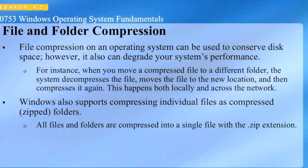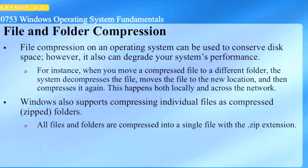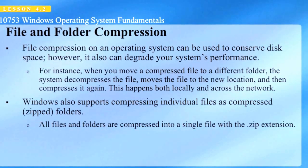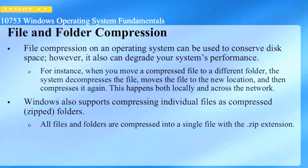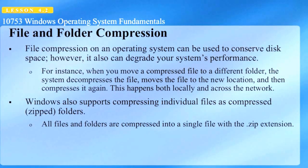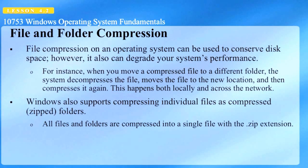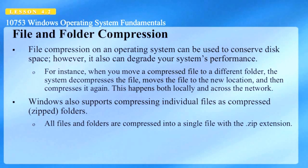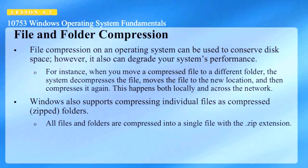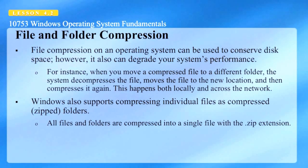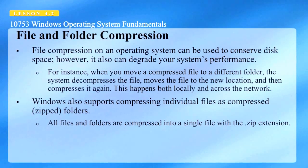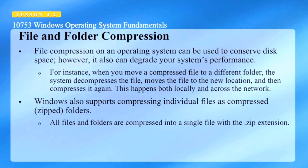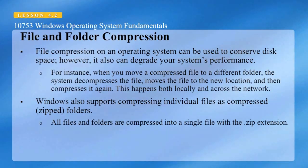File compression on an operating system can be used to conserve disk space. However, it can also degrade your system's performance. For instance, when you move a compressed file to a different folder, the system decompresses the file, moves it to the new location, and then compresses it again — this happens both locally and across the network. This process utilizes a lot of system resources and can slow down your system. Windows also supports compressing individual files as compressed folders or zip folders, where all files and folders are compressed into a single file with a .zip extension.